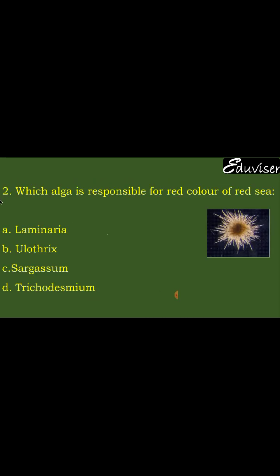Next question: Which alga is responsible for the red color of the Red Sea? The answer is hidden in the question — it is an alga. The question asks which specific alga causes the Red Sea's red color. Option 1: Laminaria — this is brown algae, so it gives a brown color, not red. Option 2: Ulothrix — this is a green algae. Sargassum is also a brown algae.